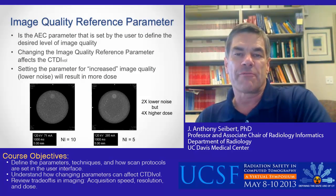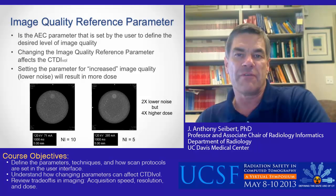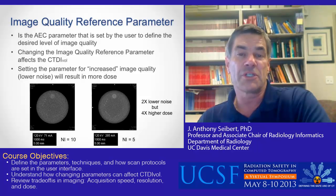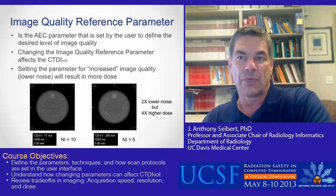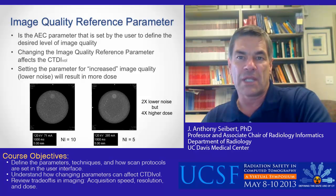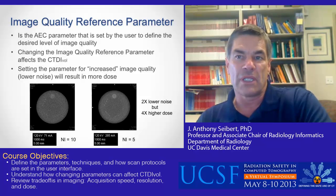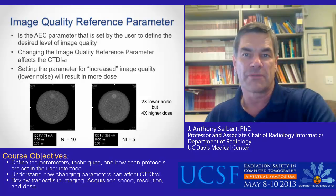The image quality reference parameter defines the level of tube current and thus the noise in the reconstructed image. One manufacturer uses a parameter called noise index, which is an estimate of the standard deviation of CT numbers in a reconstructed image. The variance of the image is directly proportional to the number of x-rays detected, and the standard deviation is equal to the square root of the variance. When changing the noise index to lower values to achieve lower noise, image quality improves but dose increases by the square of the amount of noise decrease. For example, an image acquired with noise index equal to 10 requires 71 MAS. If the goal is 2 times lower noise, the noise index can be set to 5, and the MAS increases to 285, resulting in much better image quality but with 4 times the CTDI vol.